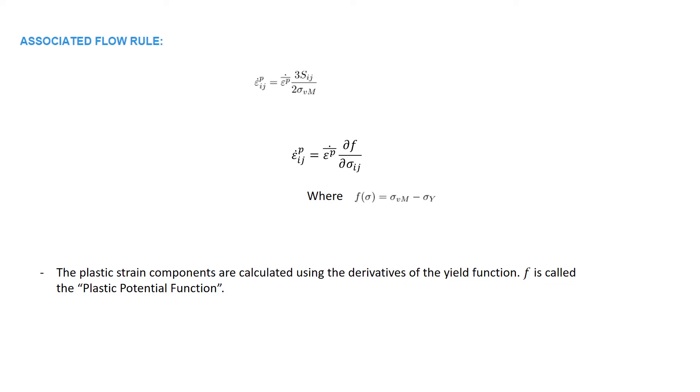Because the flow rule is based on the derivative of the plastic potential energy function, which also happens to be the yield function, the flow rule is called an associated flow rule, or associated with the yield function. In plasticity of soils, other flow rules exist which are termed non-associated flow rules.